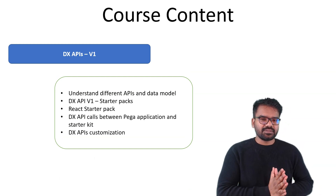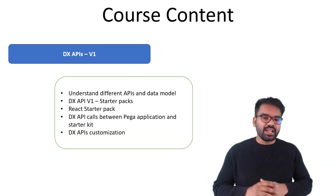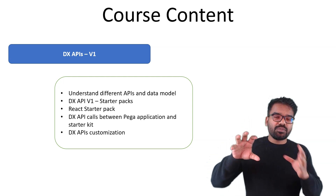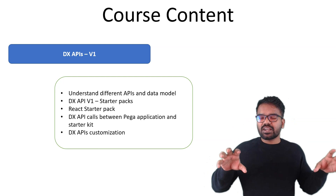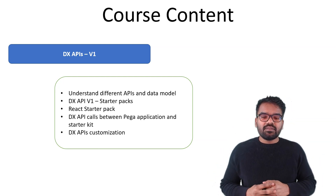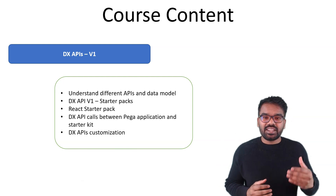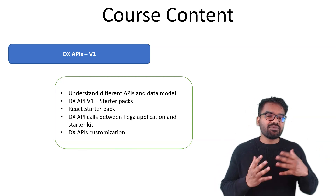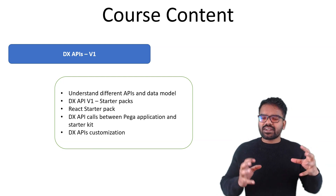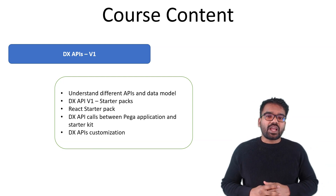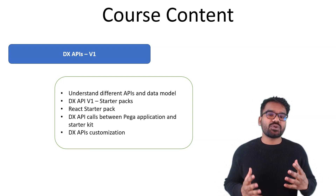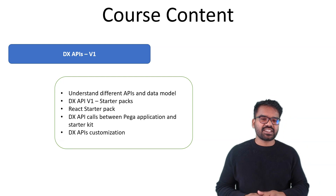Once that is done, we get into DX API version v1. I have purposefully separated DX API version 1 before Cosmos, and version 2 with constellation. Here we will talk about version v1 — we will understand the data structure, go into the starter packs, explore the React starter packs, see how API calls are getting made, how to customize a DX API, and if you want to introduce a new DX API, I will explain everything in that section.